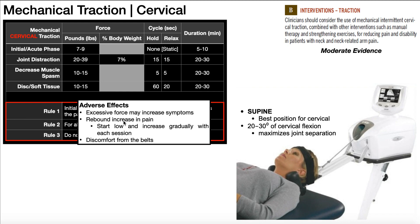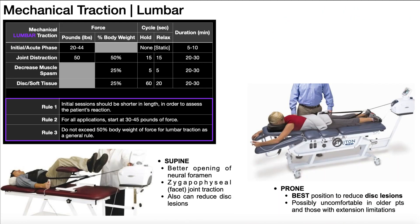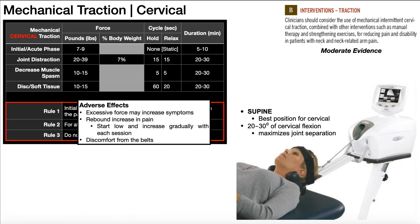Now let's look at mechanical traction of the lumbar spine. The cycles are very similar and the durations are also similar, but the poundage is greater. This makes sense because the lumbar spine is stronger, bigger, and sturdier than the cervical spine — it can tolerate more, and you need more force to get the same response.